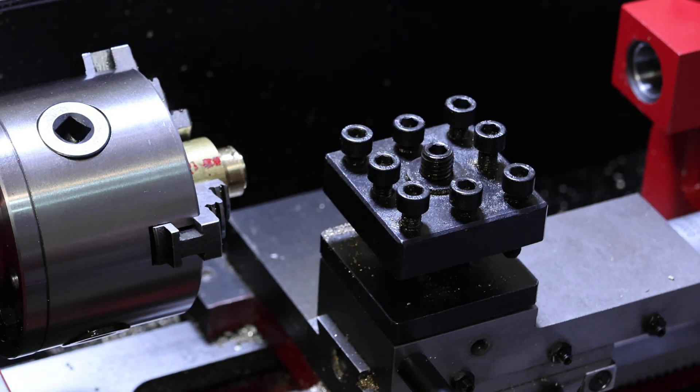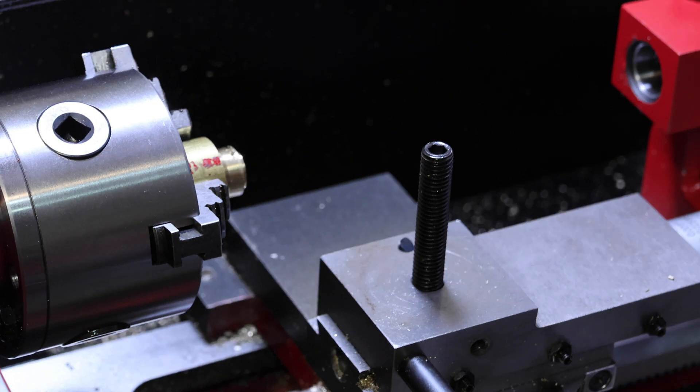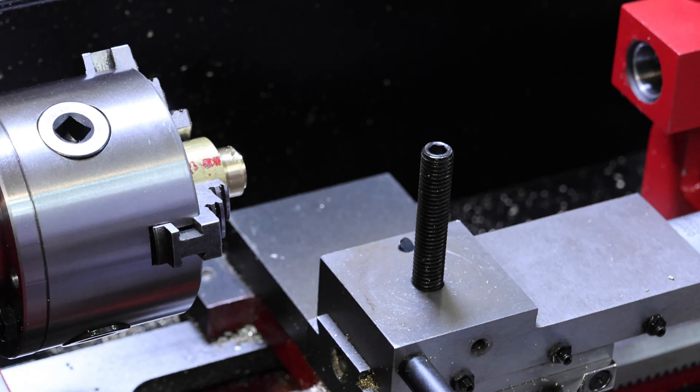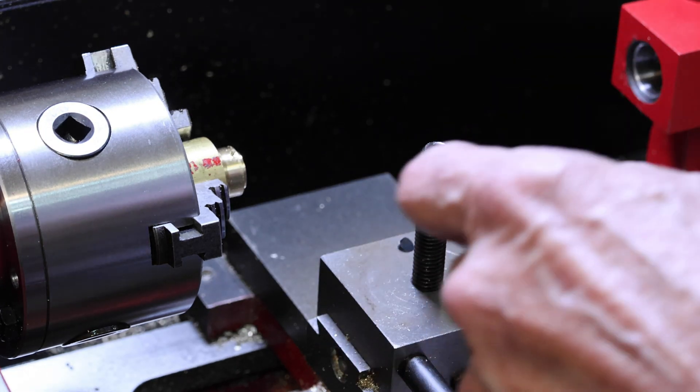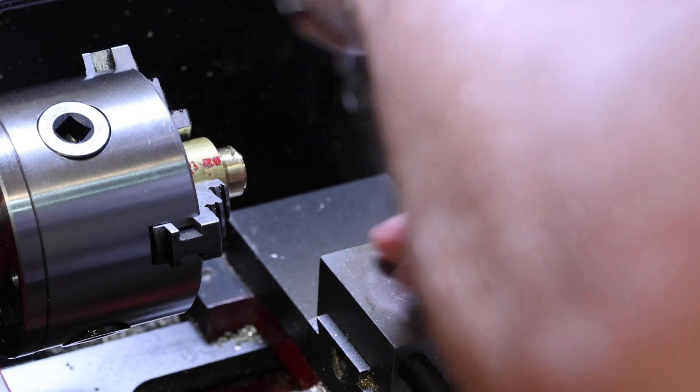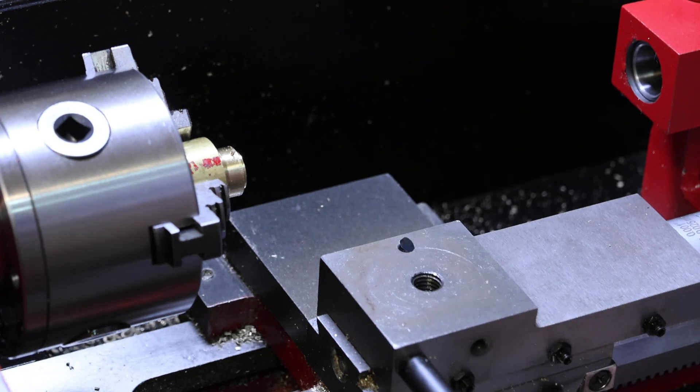Alright so first thing we'll remove this tool post handle. And the tool post just lifts off. And now we need to remove this screw. It's an A10 I believe it is. It removes very easily with an Allen key. So we'll go ahead and put our old parts in this plastic bag so they don't get lost.